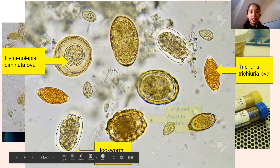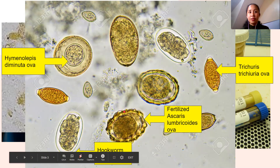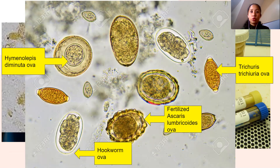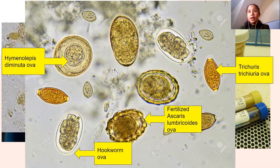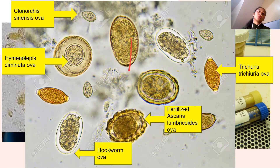We have fertilized Ascaris lumbricoides ova. When the mammillated layer becomes rougher, it becomes fertilized. Once fertilized, this ova can be infective — it can infect humans. We also have Clonorchis sinensis and Trichostrongylus ova. So those are just a few examples of ova you could find under the microscope. Under hookworm ova, there are many species — Ancylostoma duodenale, Necator americanus, and others.